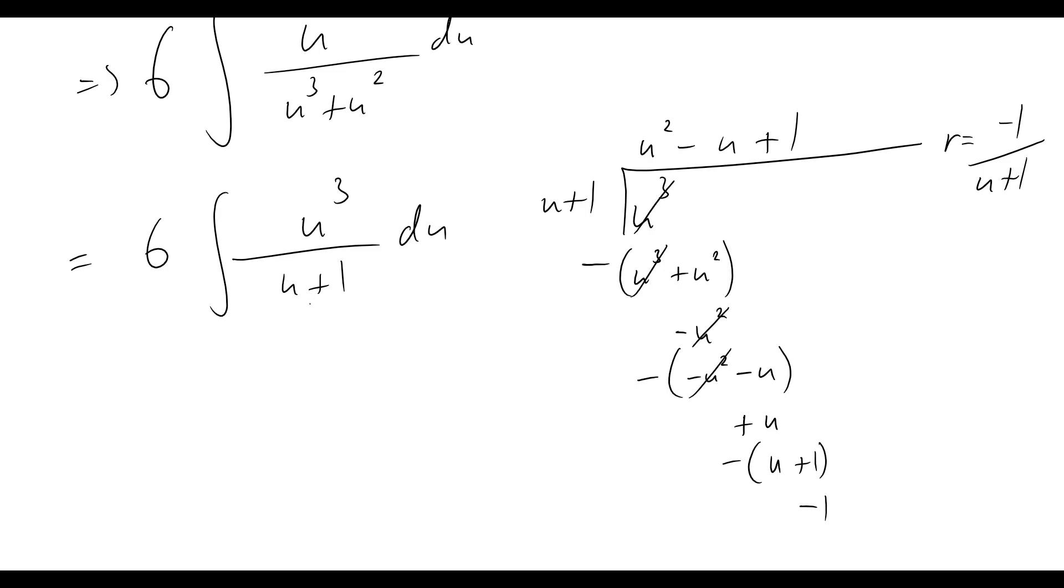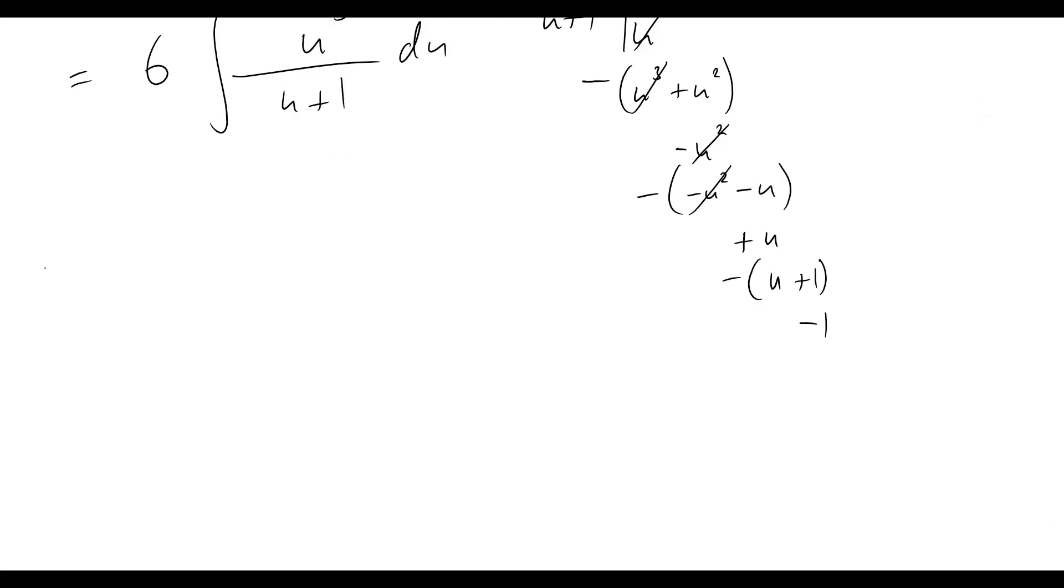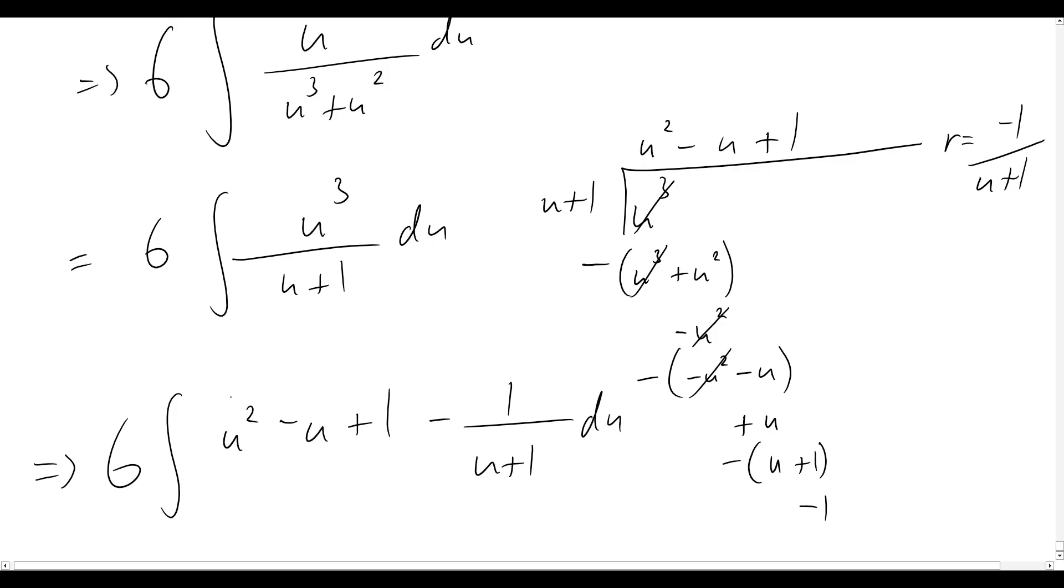So what that's going to allow us to do now is it's going to allow us to rewrite u cubed over u plus one as this polynomial here, this quadratic, plus this remainder over here. So let's get right into that now. So now our problem will become six outside the integral of u squared minus u plus one minus one over u plus one du. And let's just double check that we've got that's our quadratic factor that we've already seen and this is our remainder.